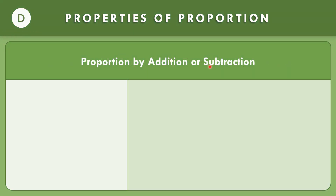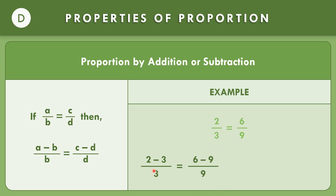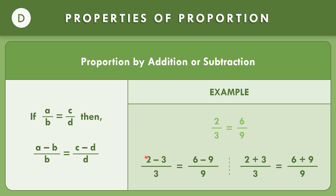Property D: proportion by addition or subtraction. If A over B equals C over D, then (A minus B) over B equals (C minus D) over D. In the given example, 2 over 3 equals 6 over 9: subtracting gives (2 minus 3) over 3 equals (6 minus 9) over 9. You can also use addition: (2 plus 3) over 3 equals (6 plus 9) over 9.